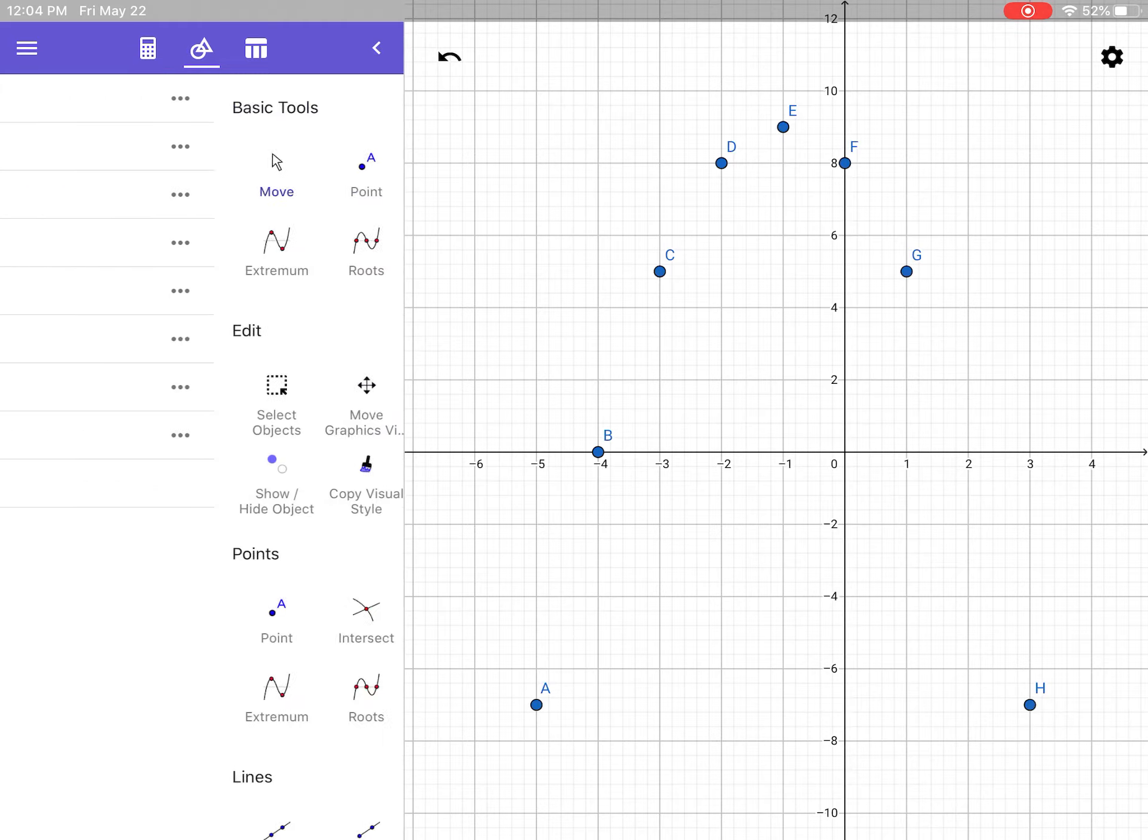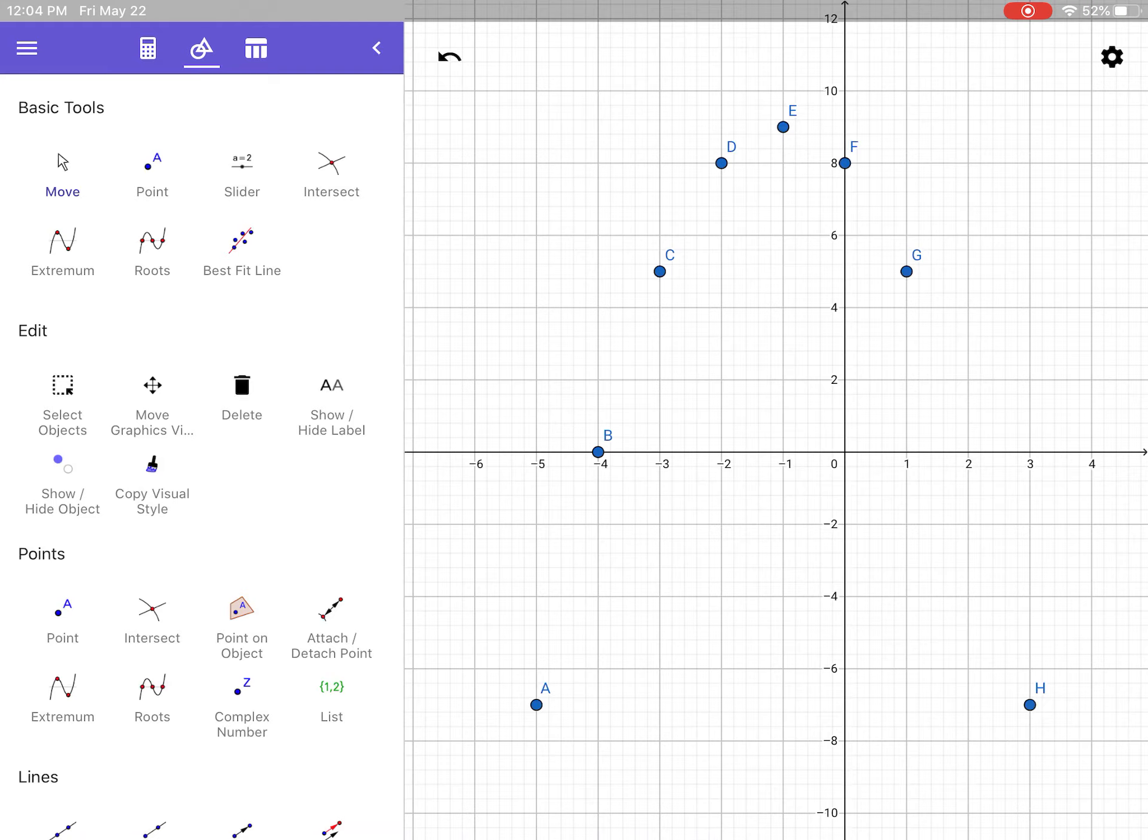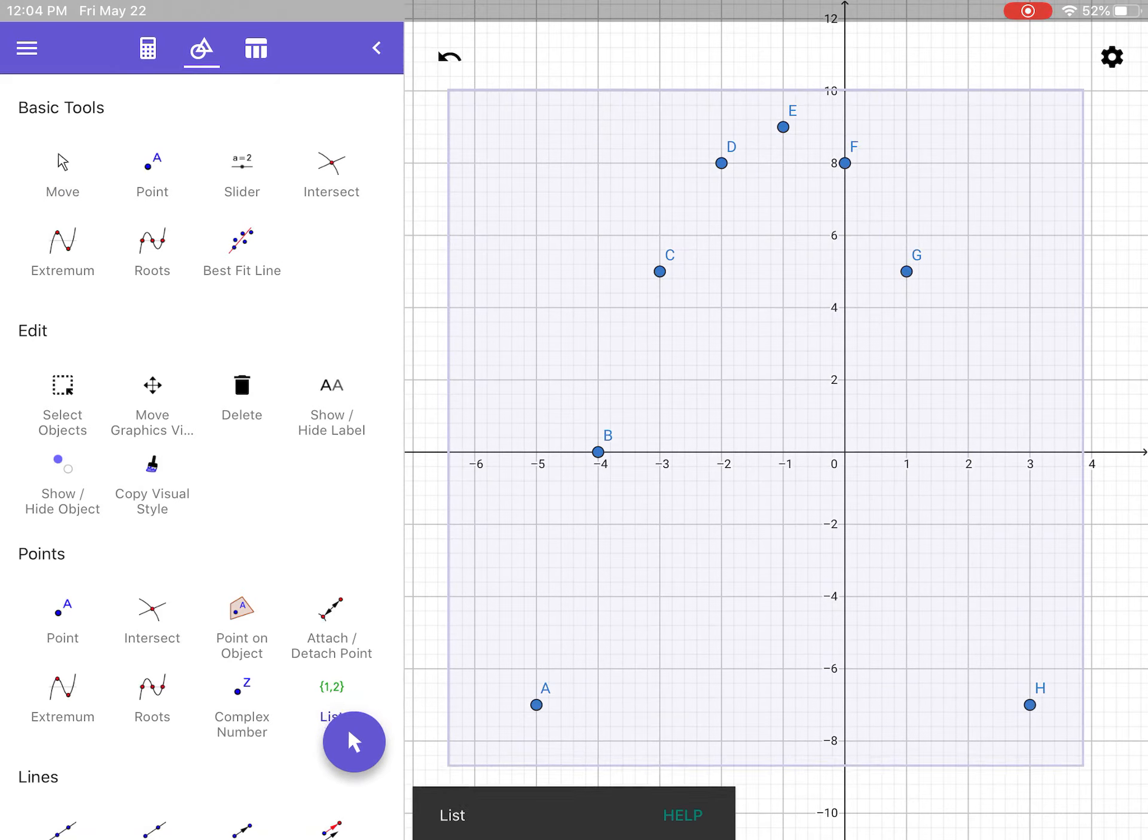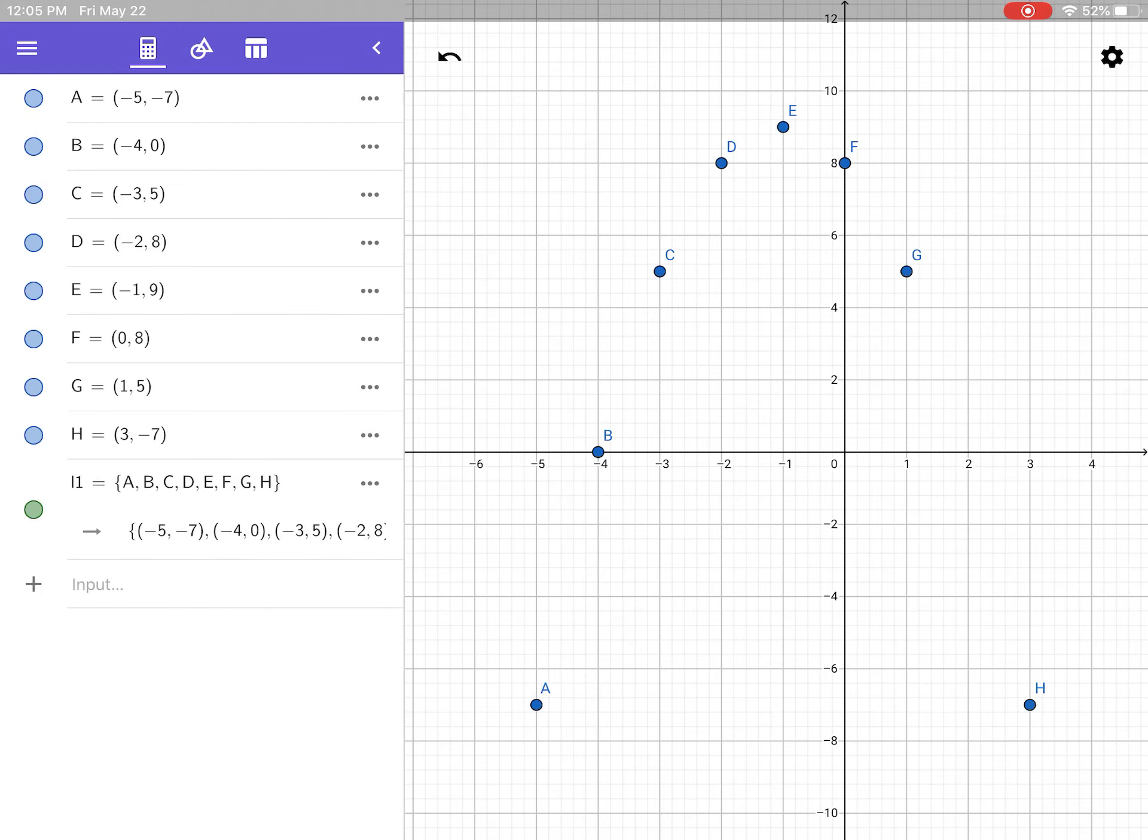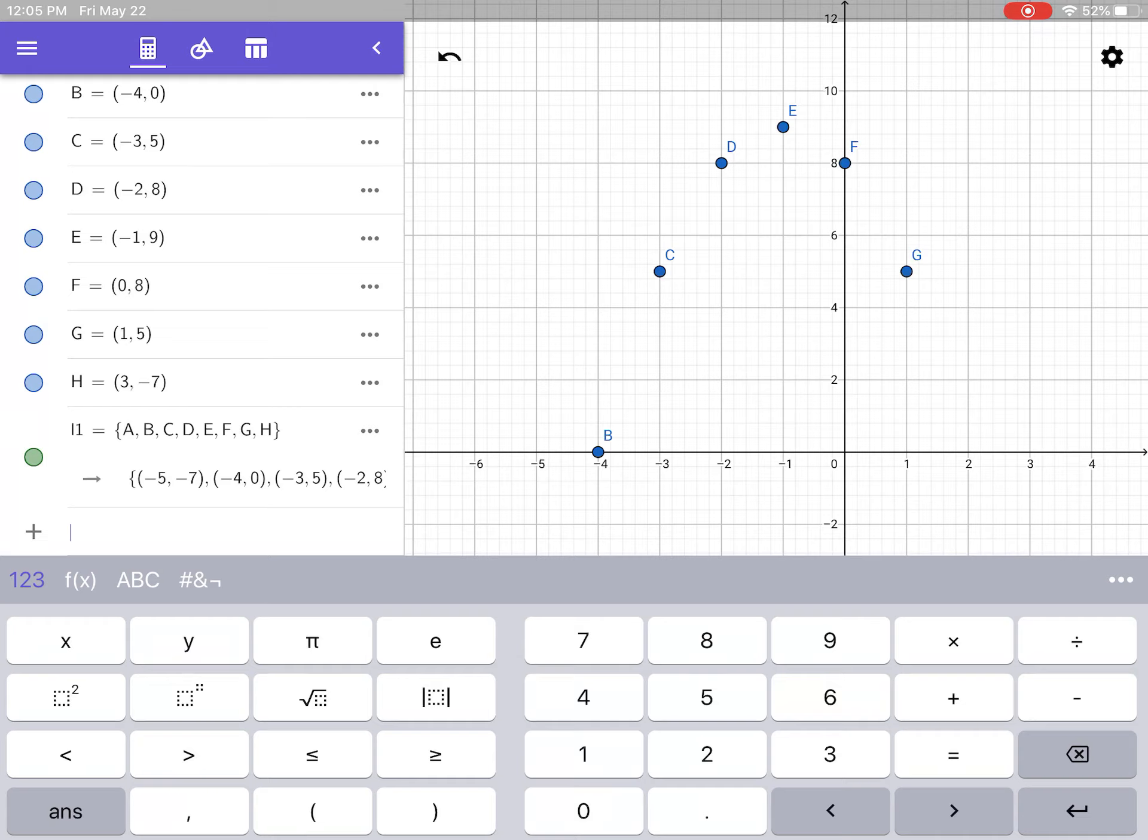I'm going to create a list. We did this in our regression unit. Go to the circle triangle on the top purple banner. List is on the bottom under points. It says list in green, 1, 2. I'm going to drag my finger so I cover all the points with the purple box and let go. List L1 created. I go back to my calculator and there's your list in green.